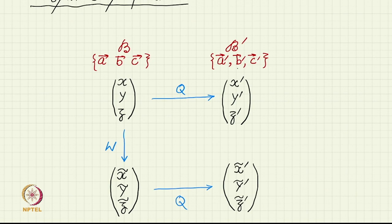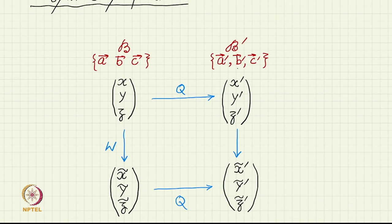As we have seen, in the new basis the same symmetry operation will have a new avatar — a new form. Although it is the same rotation or the same reflection which took (x, y, z) to (x̃, ỹ, z̃), that same rotation will take x prime, y prime, z prime — which is just a different name for the same vector — to (x prime tilde, y prime tilde, z prime tilde), which is the name of the rotated transformed vector. The transformation is the same, but its representation is going to be different. Let us call that W prime.